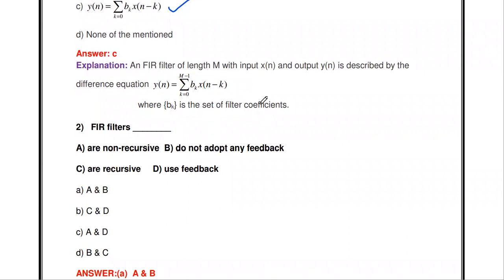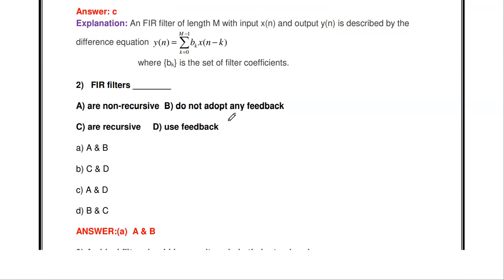Where bk is the set of filter coefficients, x(n) is the input, y(n) is the output, and x(n-k) represents delayed or previous inputs.